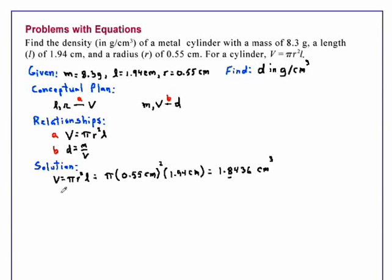So now we have our volume, and we're ready to calculate the density. Density is mass over volume. The mass that we're given is 8.3 grams, and our volume is 1.8436 cubic centimeters. So this gives us an answer on our calculator that will read 4.50206 grams per cubic centimeter.